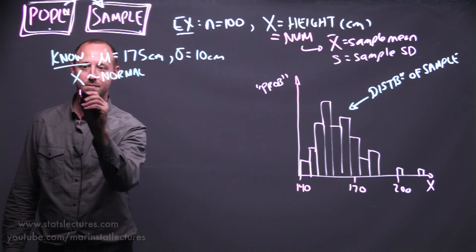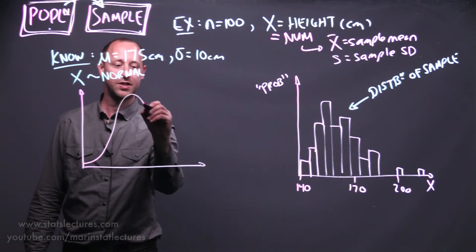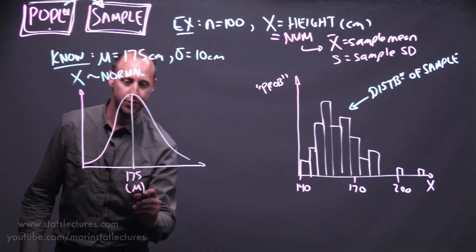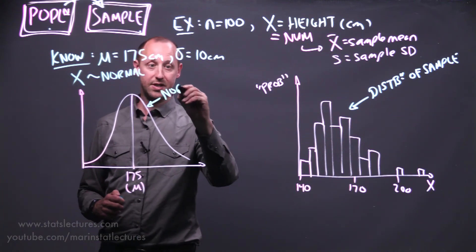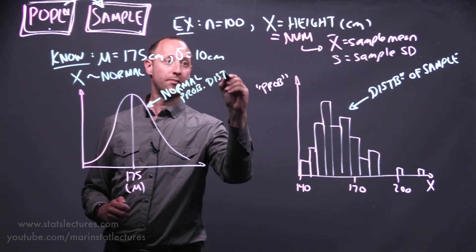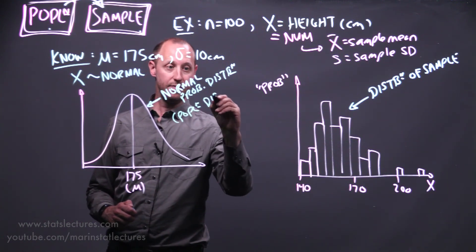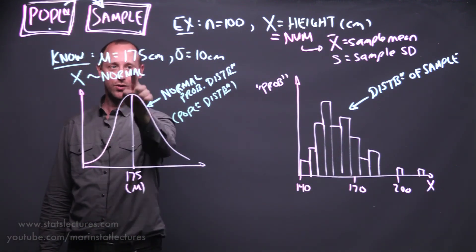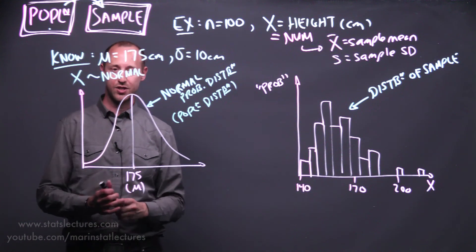We're thinking that at the population level, heights might be bell-shaped and symmetrically distributed around that mean of 175 — the true mean. This is the normal probability distribution, and we can think of it as describing the population's distribution. We're living in this theoretical world where we suppose what if we knew the true mean, true standard deviation, and what if we knew the true histogram in the entire population was bell-shaped and symmetric.